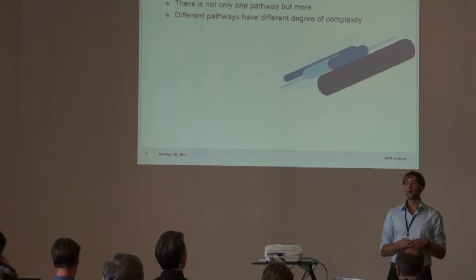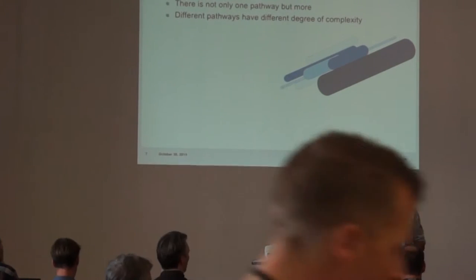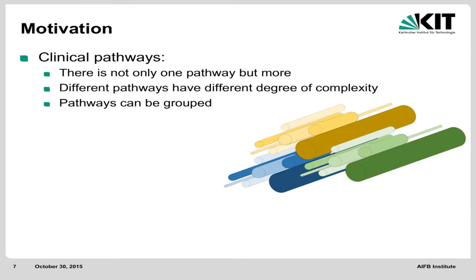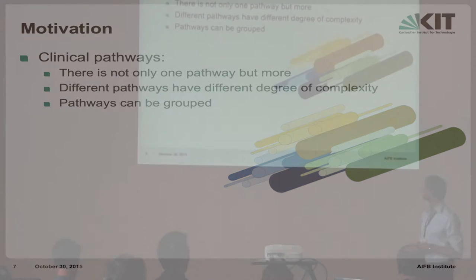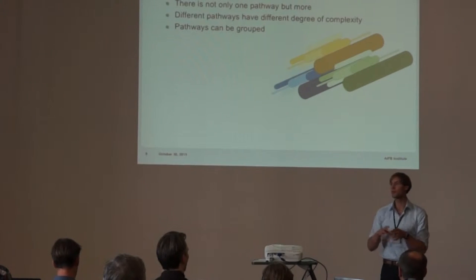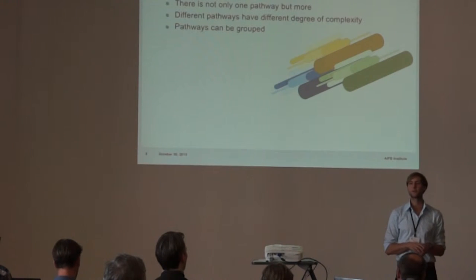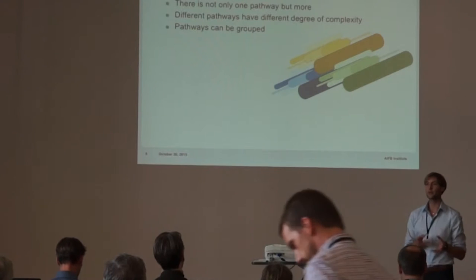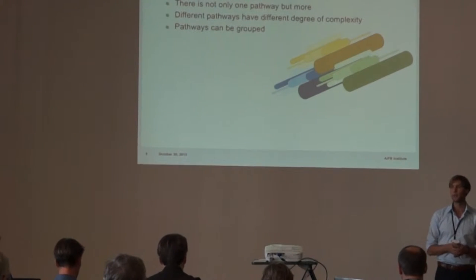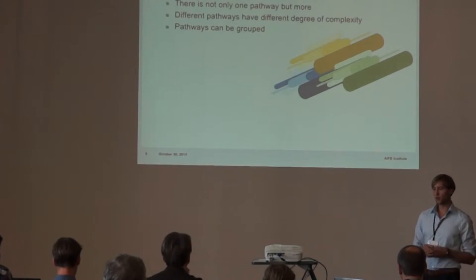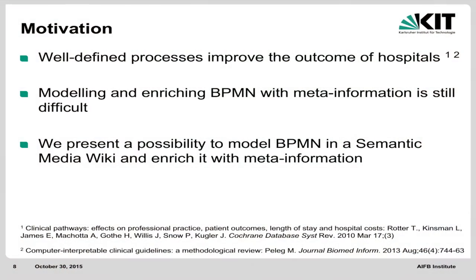We also want to annotate these pathways and group them — for example, all pathways for heart diseases, all pathways for hepatocellular cancer, and so on. It has been shown that well-defined processes improve the outcomes of hospitals: the length of patient stay reduces, and the outcome improves if we have well-defined processes.